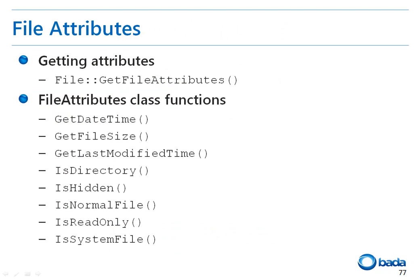The additional functions provided by the file class are for getting the attributes of a file, such as getDateTime, getFileSize, getLastModifiedTime, isDirectory, isHidden, isNormalFile, isReadOnly, and isSystemFile.